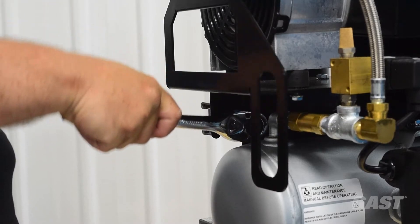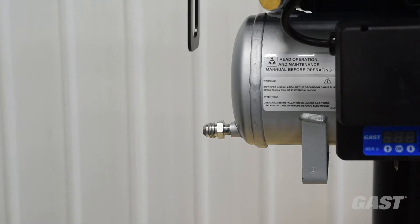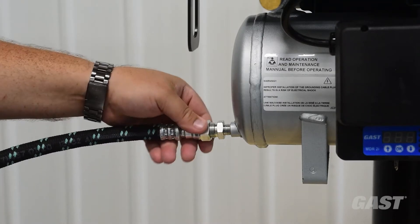Remove the protective cap on the tank outlet. Connect the provided flexible hose connector using the appropriately sized tools.